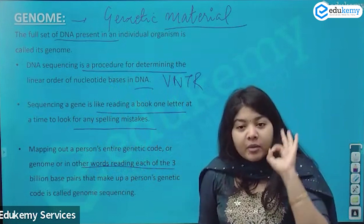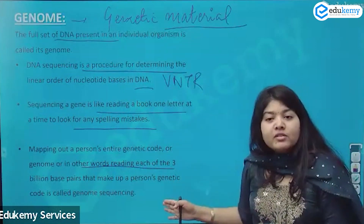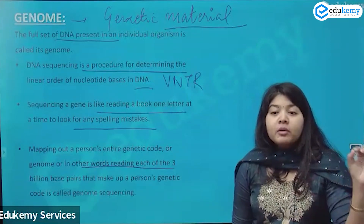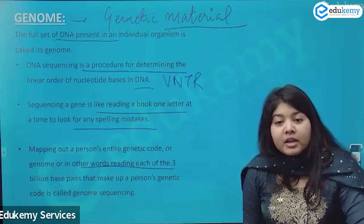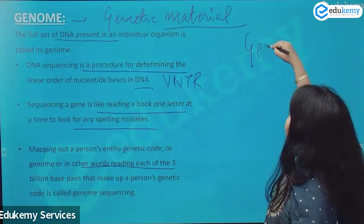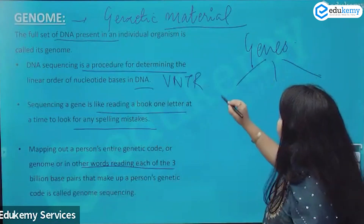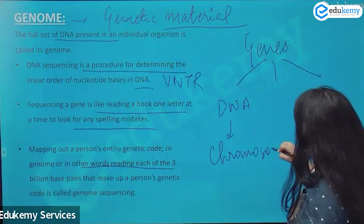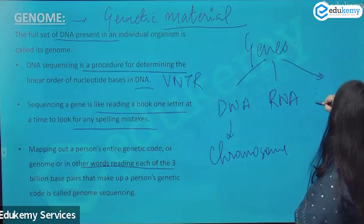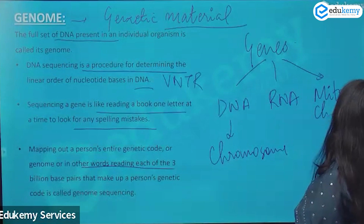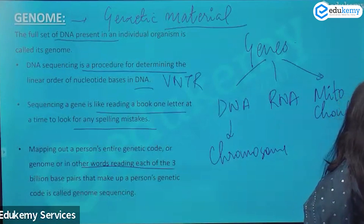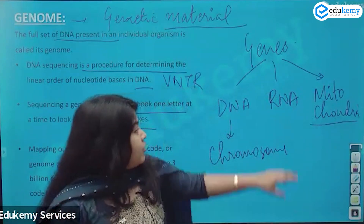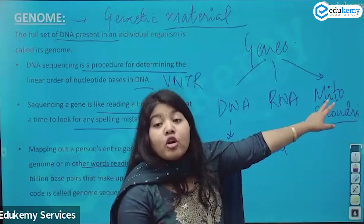Is it logical to do genome sequencing or DNA sequencing? Genome sequencing covers all DNA material — your genes are present in DNA, chromosomes, RNA, and also in mitochondria. Humans have something called a three-parent baby, and in that case we will see how the genetic material from mitochondria comes into picture.